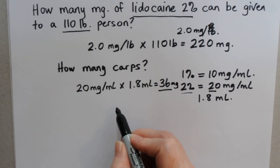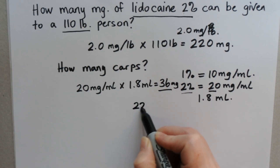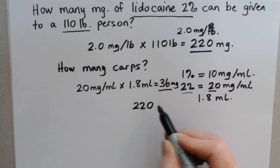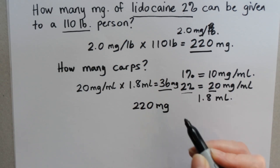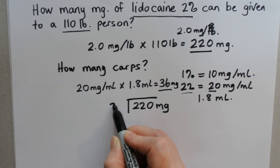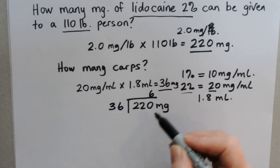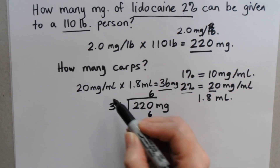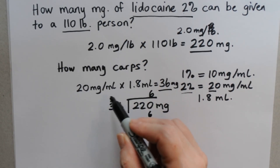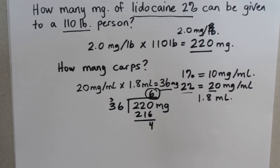Now we divide. We've got 220 milligrams as our maximum dose, and each carpule is 36 milligrams. So 6 carpules is the most that we can give of lidocaine to this 110 pound person.